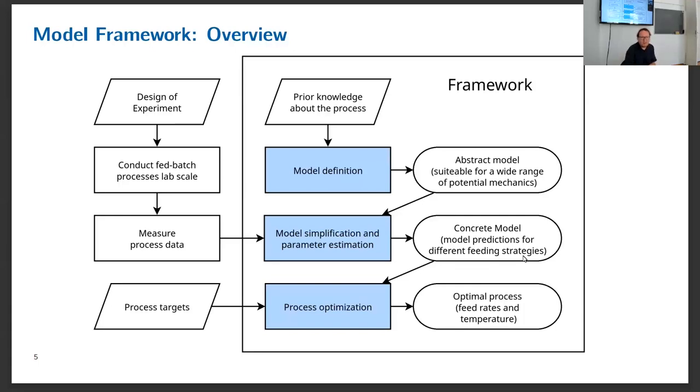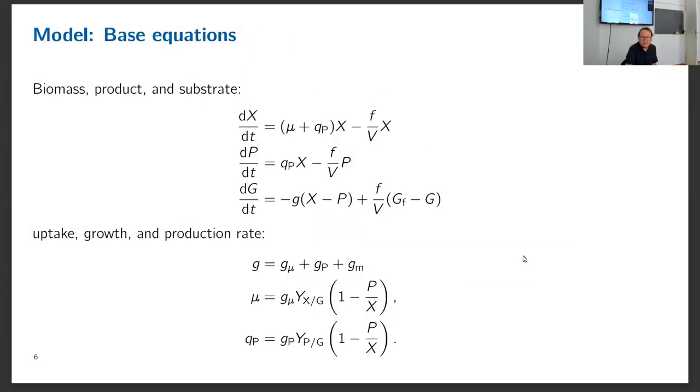Now I can predict what happens under given conditions. But the final target is to have an optimal process. Let me show you the equations we use. This is quite similar to what I have shown before, just a different notation to make modeling easier. The main difference is that I include a maintenance term and that all substrate not used for biomass goes to product.